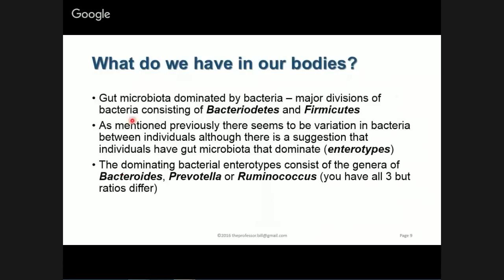In terms of the gut microbiota — the different bacterial species — bacteria are the dominant species. Yes, we do have viruses and other prokaryotic organisms that live there, but bacteria dominate in the GI tract. The major divisions include the Bacteroidetes as well as the Firmicutes, and this is an important concept to know. Even though we have a lot of different bacteria, just like with the skin, if you look between individuals — male, female, or different individuals — we all have slightly different gut microbiota, but we tend to have them dominated by these two different types.